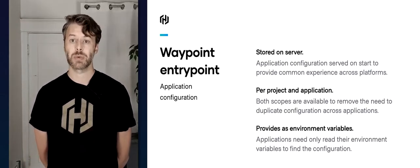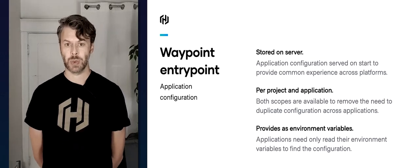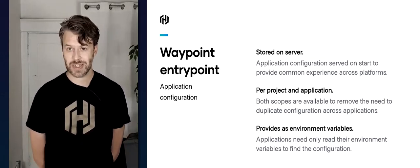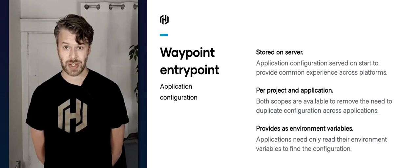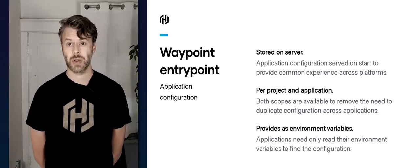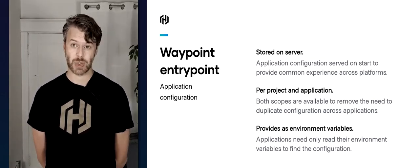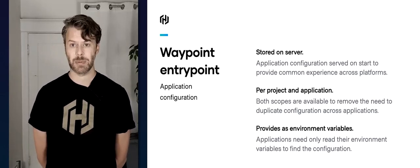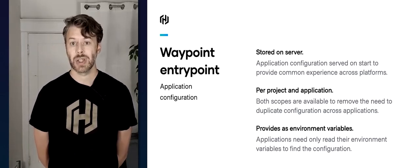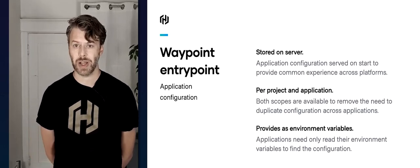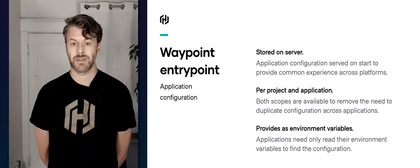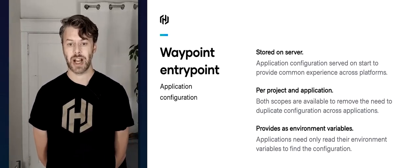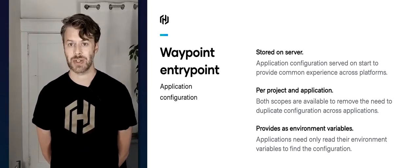Let's look at another feature of the entry point called application config. This is a simple but powerful feature — you can run 'waypoint config set' and that will set variables that are all stored on the server. Those variables are scoped both per-server and per-project, so if you have a project using two applications that share an S3 bucket, you can configure that S3 bucket information at the project level and it's shared down to all applications. All these configuration variables are provided as environment variables.